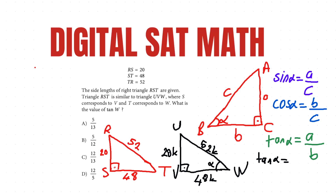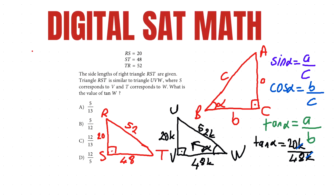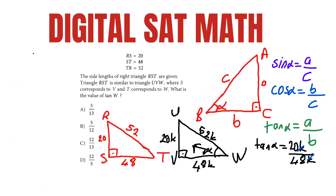To find the value of tangent W, from that vertex you're looking for the opposite side, which is 20, over the neighboring side, which is 48. You can simplify 20 over 48 — both are multiples of 4 — to get 5 over 12. So the answer is 5/12, which is choice B.